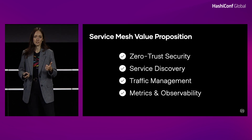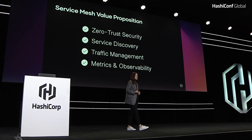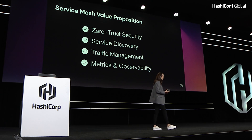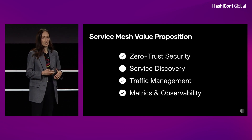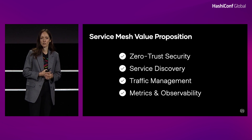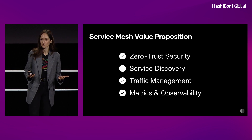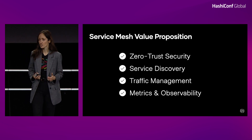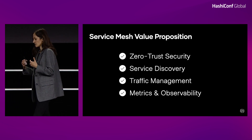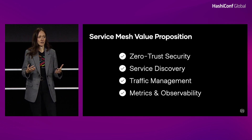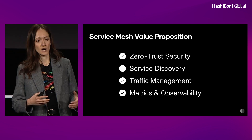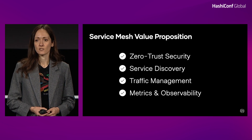Second is service discovery. Typically service meshes come with some service registry that makes it very easy to discover services. Third is traffic management, which refers to things like fault injection or blue-green deployments. Lastly, there's metrics and observability, because a lot of service meshes already integrate with popular observability tools, so you get that for free once you add a service mesh.